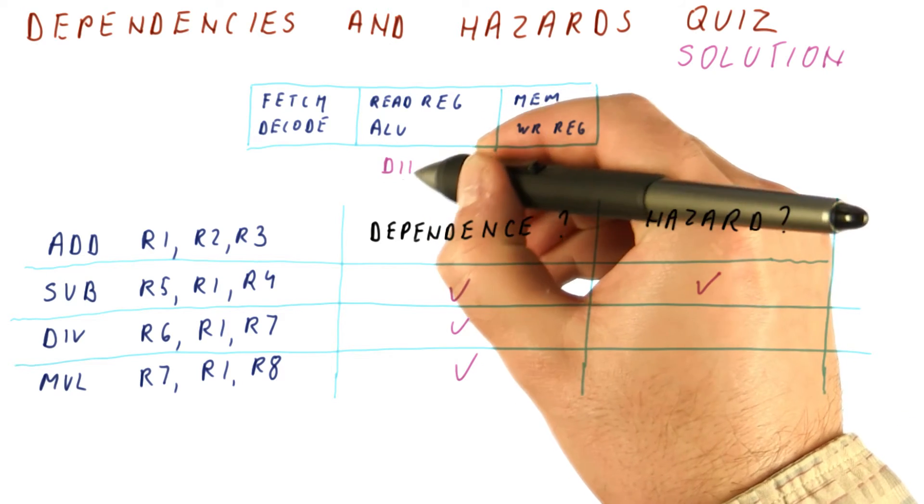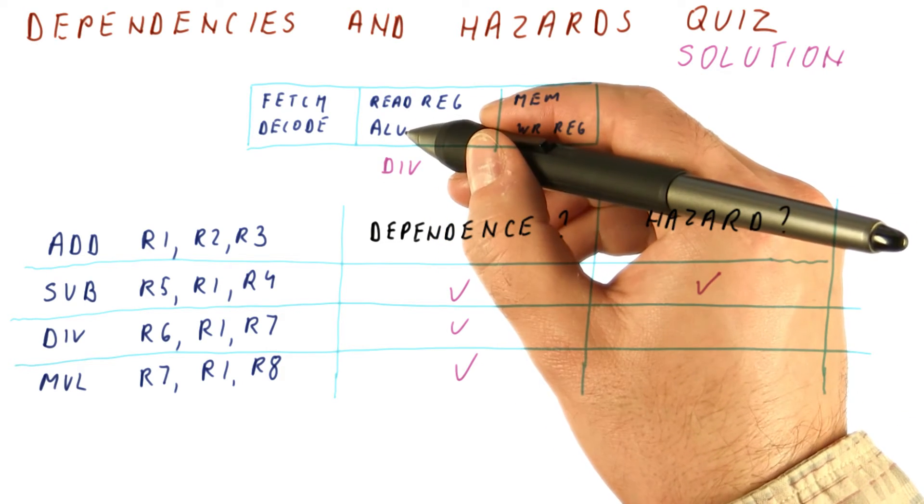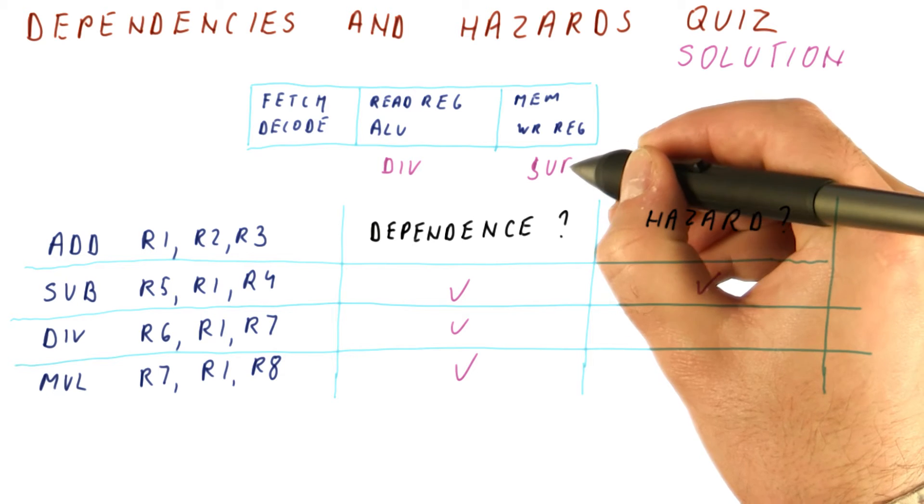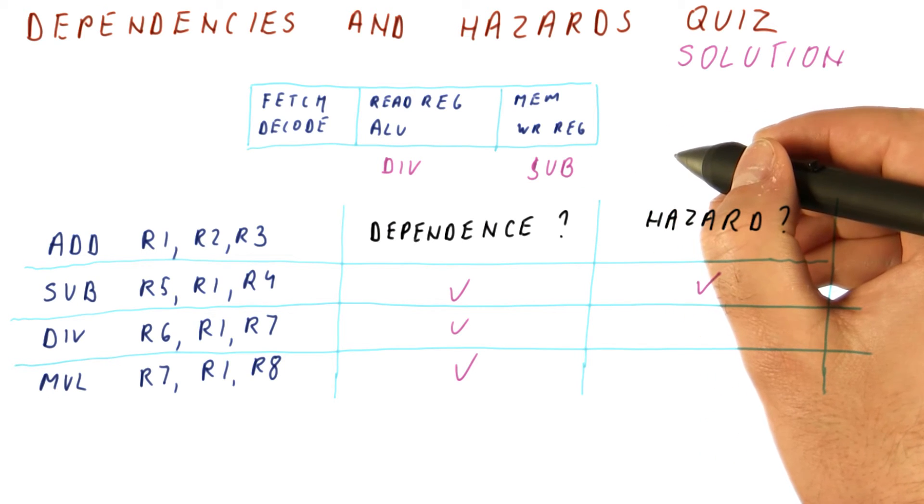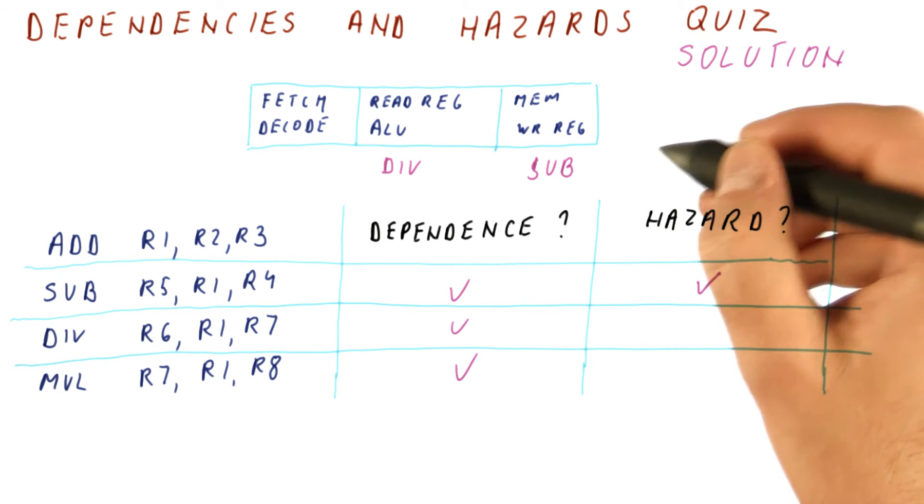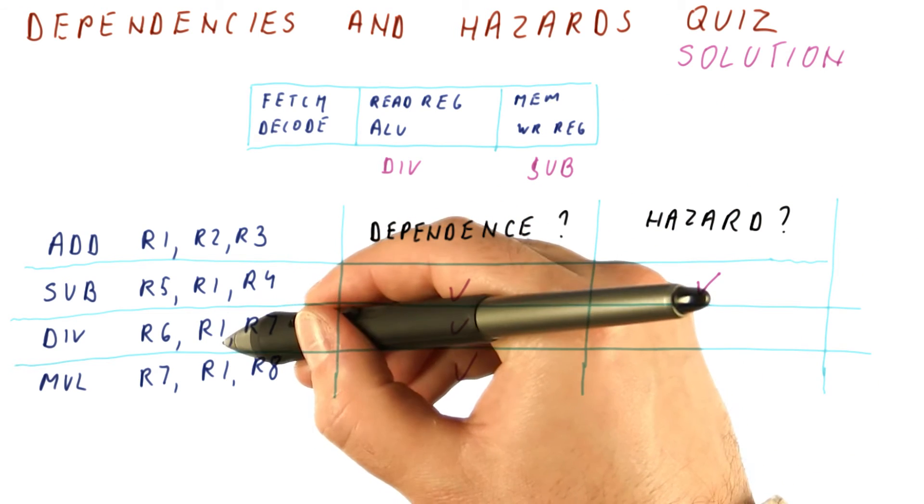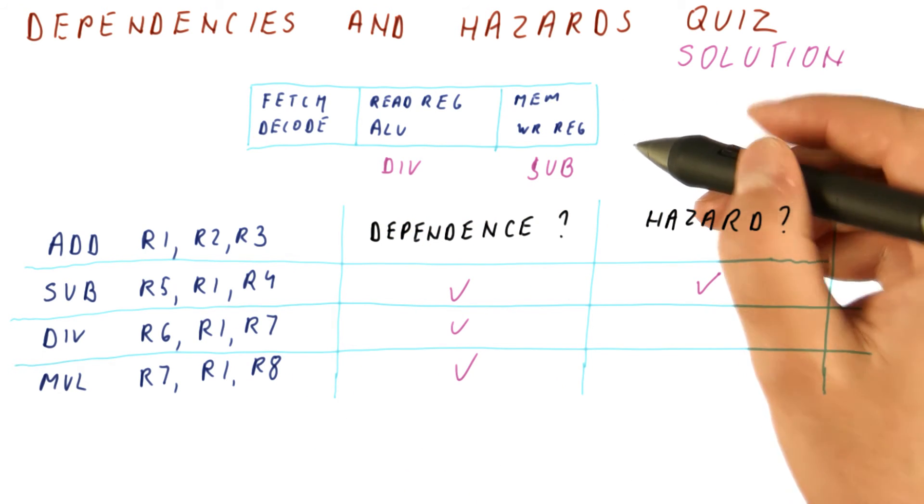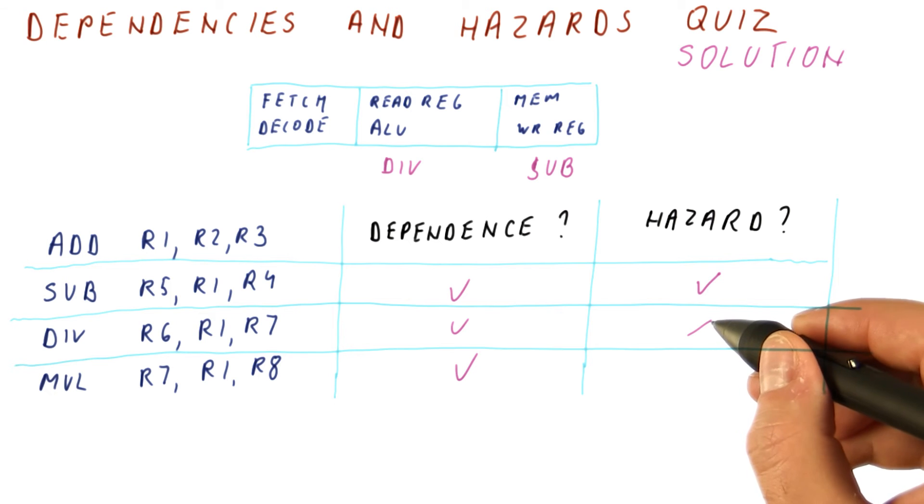In the cycle when the divide is reading the register R1, the subtract is here and the add has left the pipeline, which means the divide is reading the value of R1 that was already written by the add. So there is no hazard here.